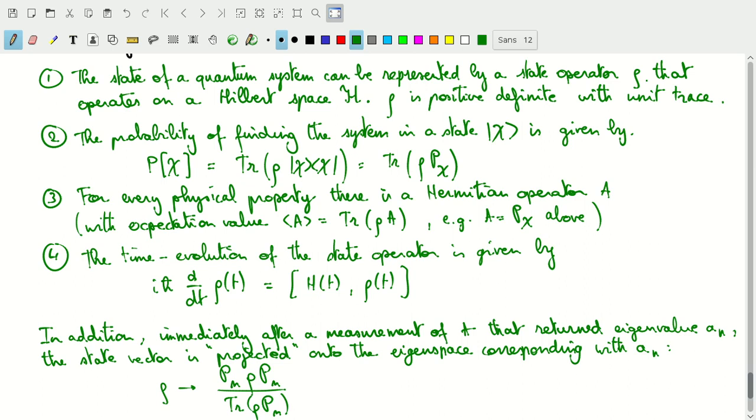The second postulate now says that the probability of finding a system in a state chi is given by the trace of rho multiplied with the projection operator on chi. So, if you think about what we talked about in terms of expectation values, this of course relates very well. So, the trace of rho times the projection operator on chi gives us the probability of finding the state in that state chi.